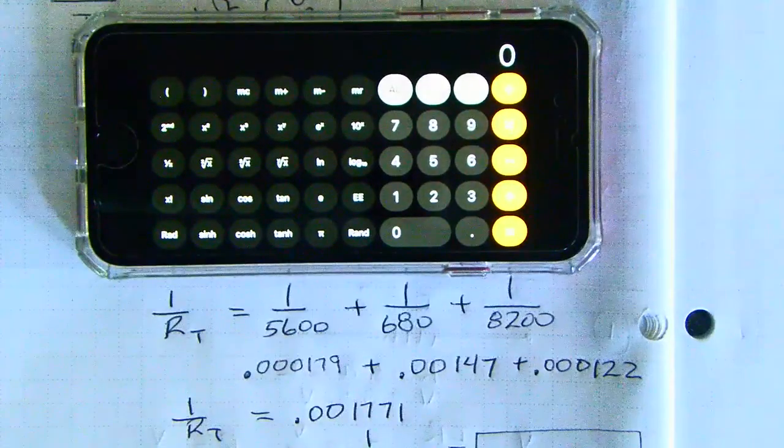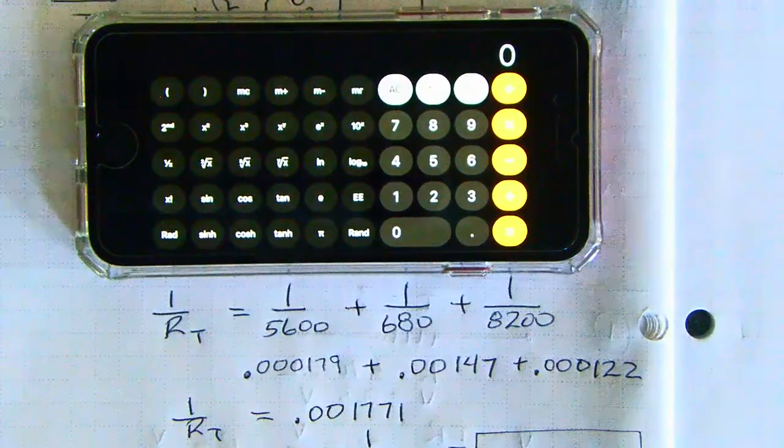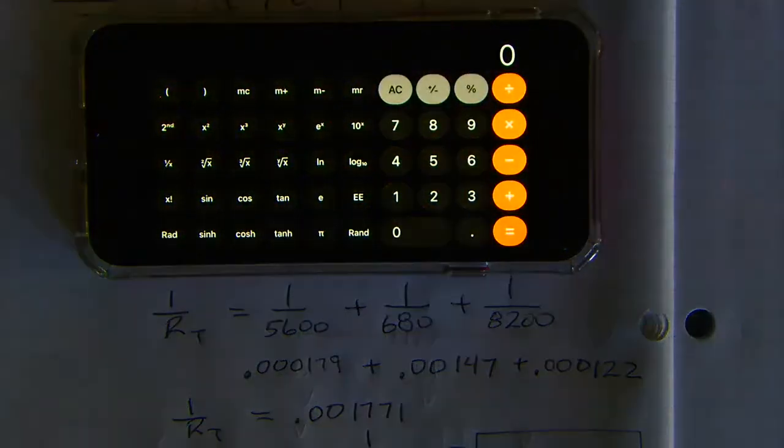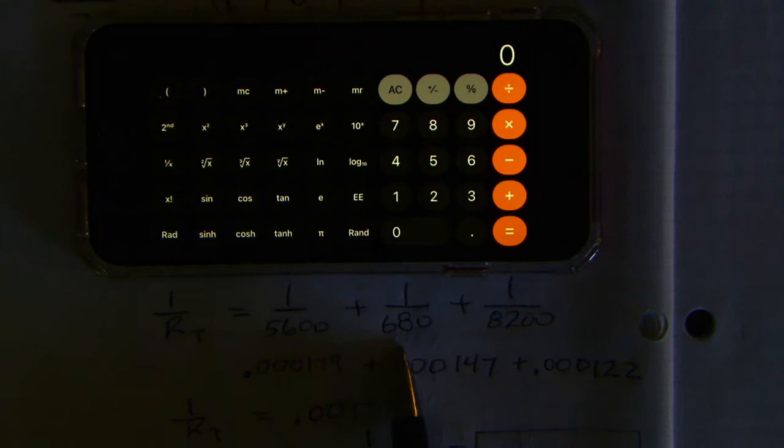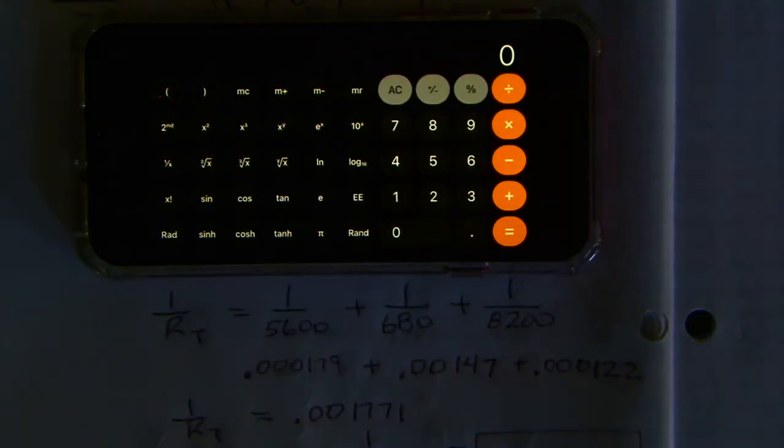What we have here is 5600, 680, and 8200. So in the calculator, if you have this function-